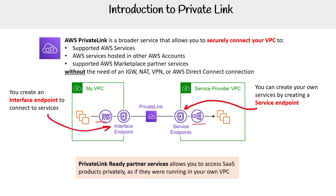There's also this thing called a Private Link Ready Partner Service, which allows you to access SaaS products privately as if they're running in your own VPC. When you use Private Link, you'll have the option to go to the marketplace, which is where it's very easy to connect to third-party services. There could also be third-party services that aren't in the marketplace. You'll see the word Private Link repeated a few times in the VPC section — understand that it applies to some things, and the only endpoint type that does not utilize it is gateway endpoints.